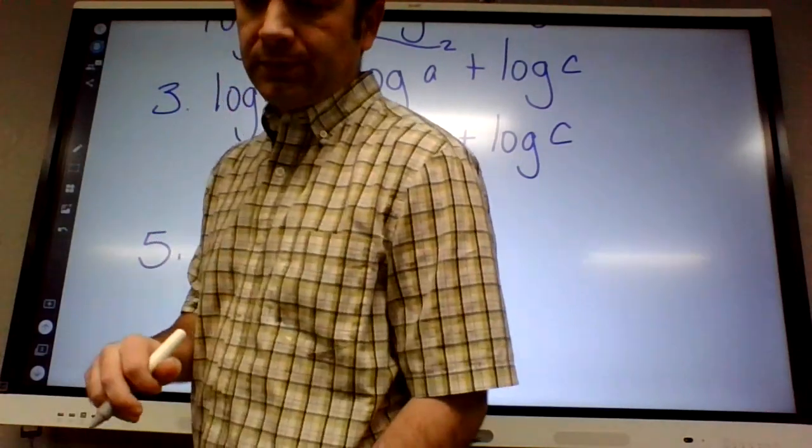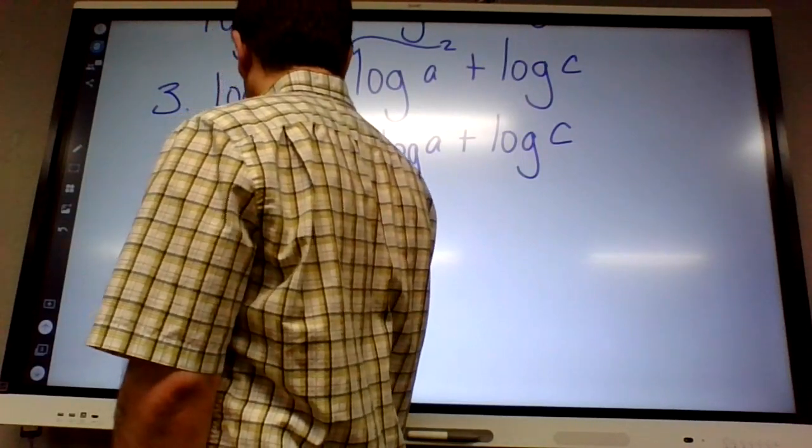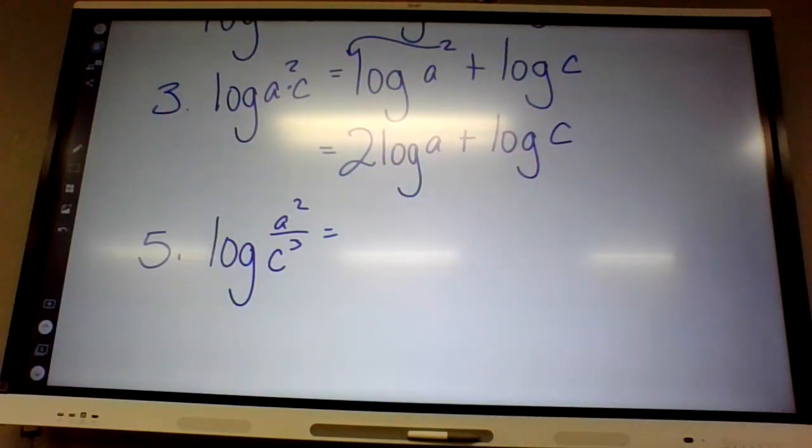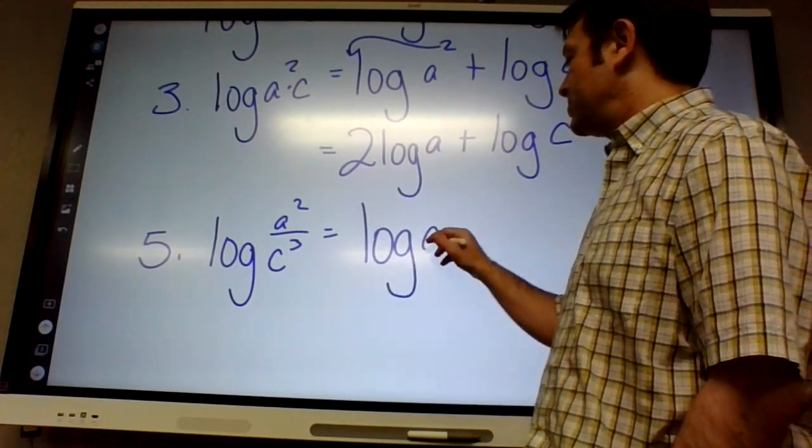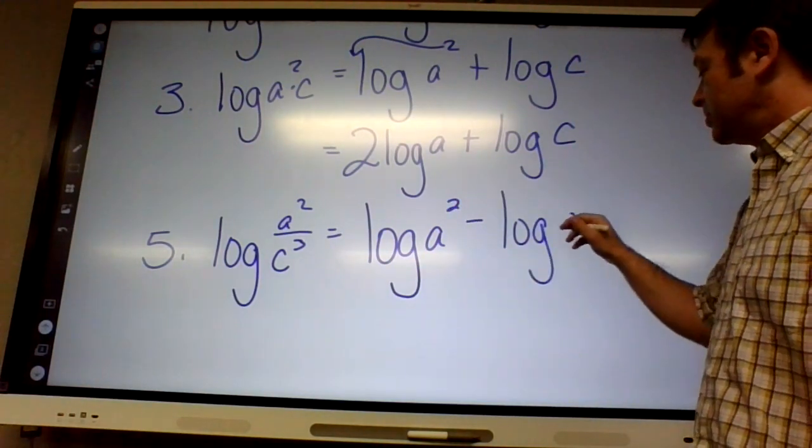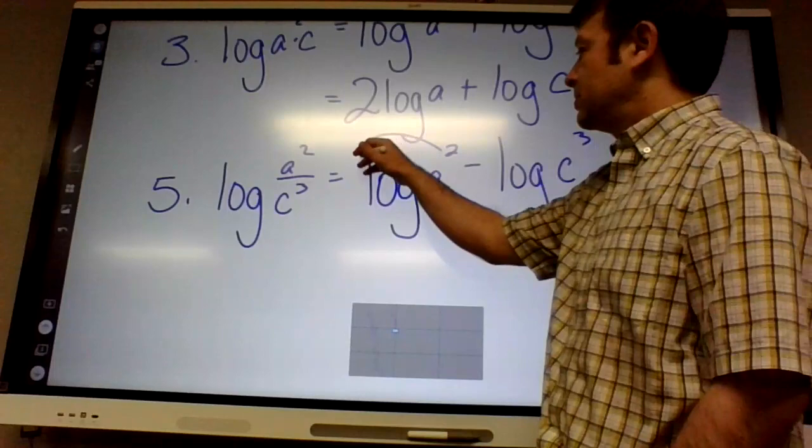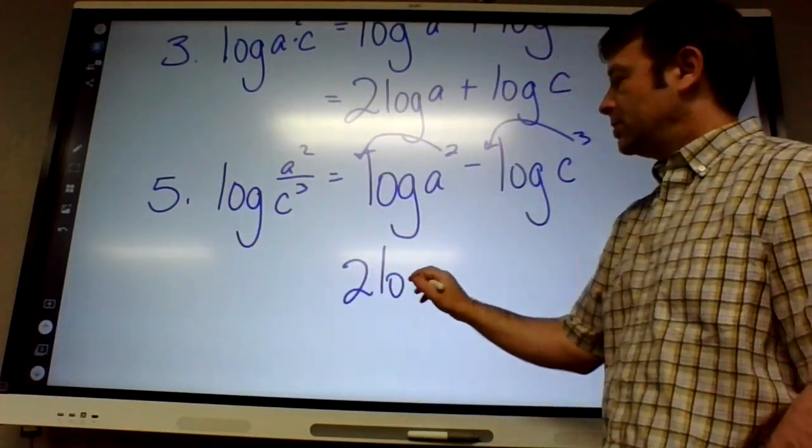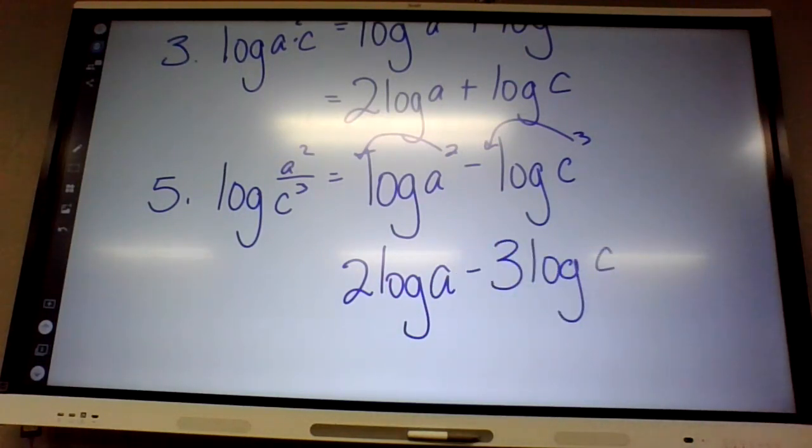So in this first section we're breaking everything apart, writing everything in terms of log of a and log of b and log of c, kind of separating everything. Number five: now this time they're divided. What do we change division into? Subtraction.